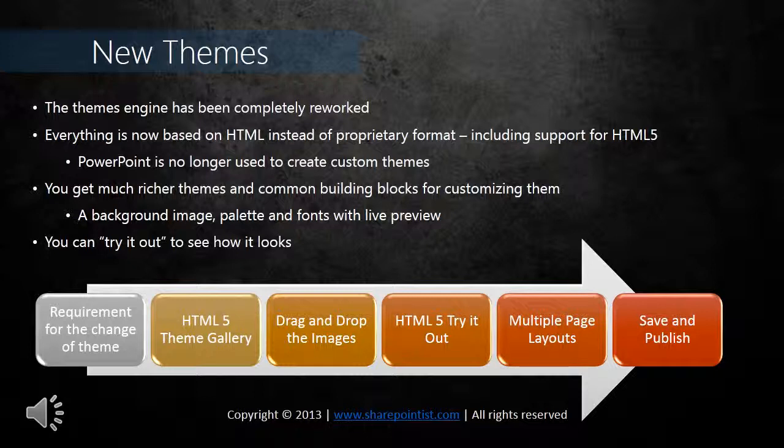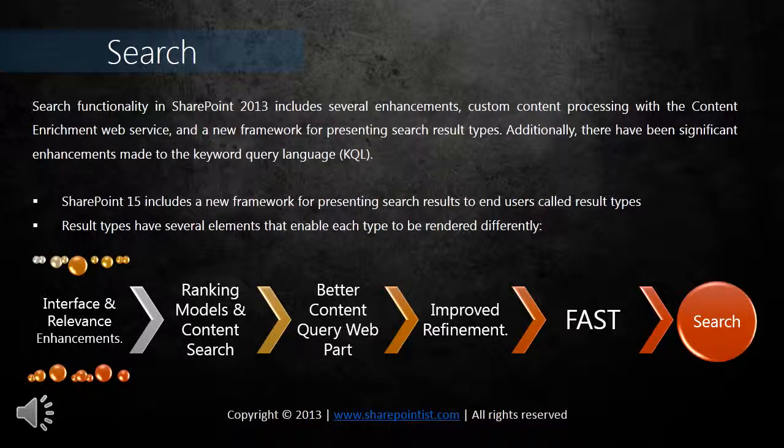Search is another important area in SharePoint 2013. Search functionality includes several enhancements: custom content processing with the Content Enrichment Web Service, a new framework for presenting search result types, and significant enhancements to the Keyword Query Language (KQL). The Content Search Web Part is new in SharePoint 2013 and uses various styling options to display dynamic content on SharePoint pages.